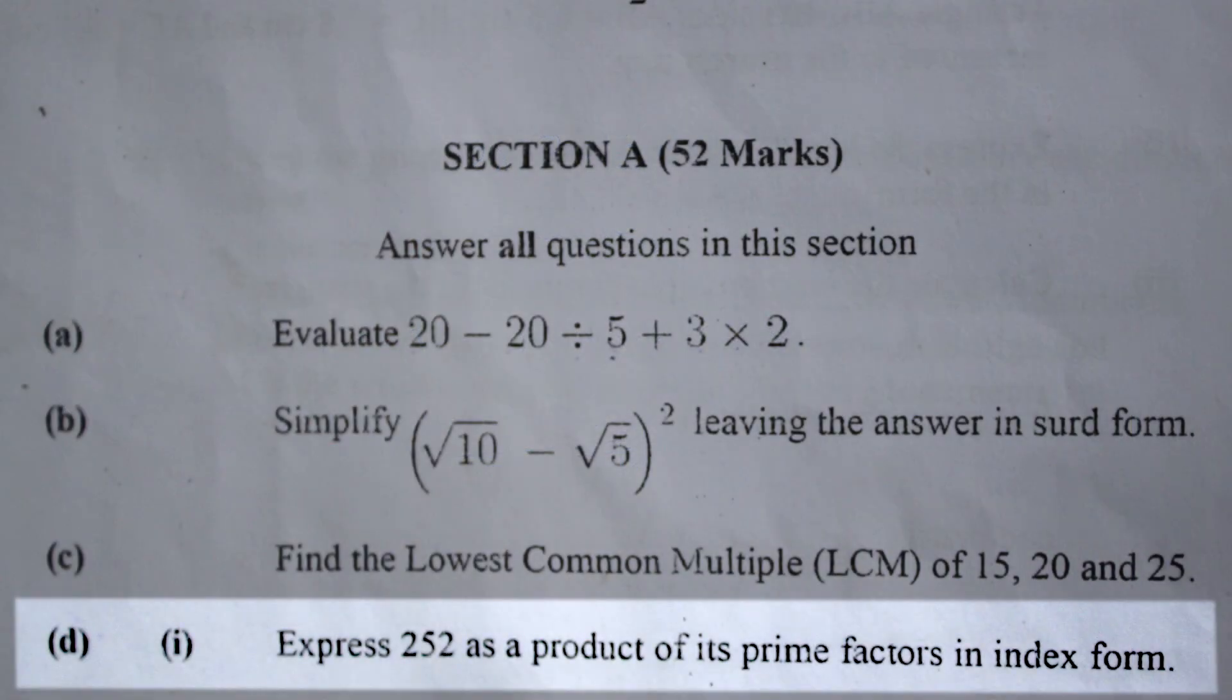Question number 1D1, express 252 as a product of its prime factors in index form. So 252 is equal to 2 times 2 times 3 times 3 times 7, which is equal to 2 squared times 3 squared times 7.